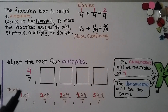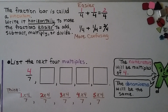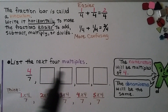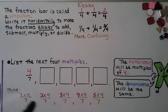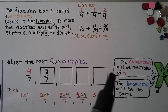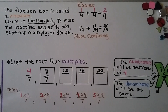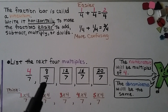We need to list the next 4 multiples of 4/7. The numerators will be multiples of 4 and the denominator stays 7. Starting from 1 times 4 over 7, the multiples are: 4/7, 8/7, 12/7, 16/7, and 20/7.